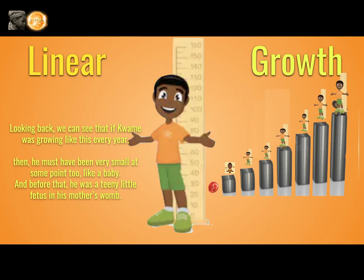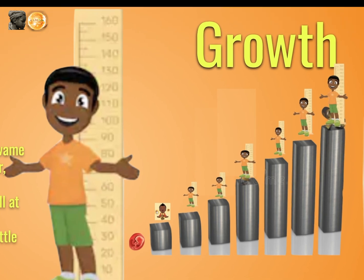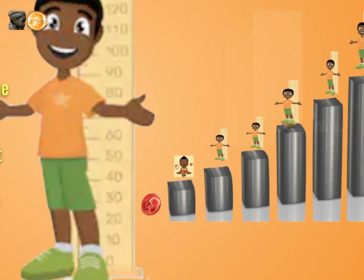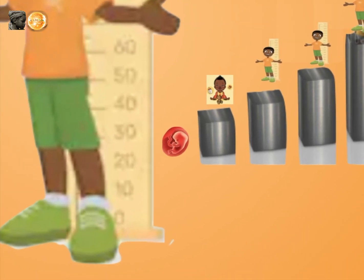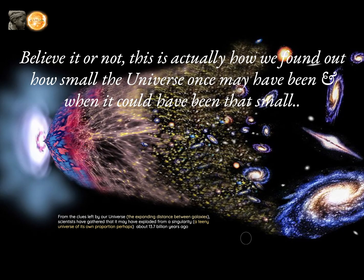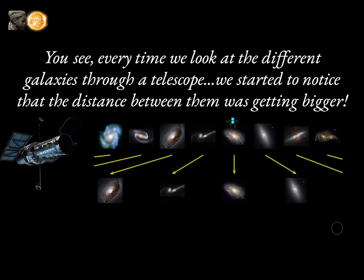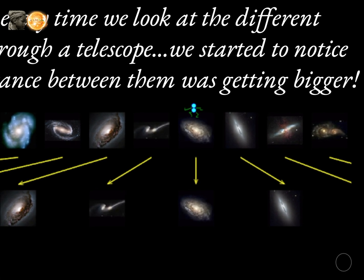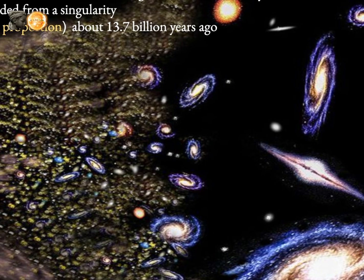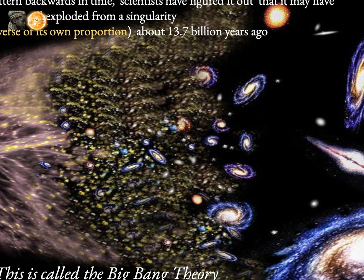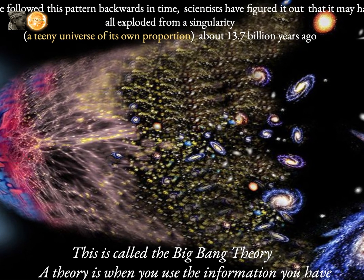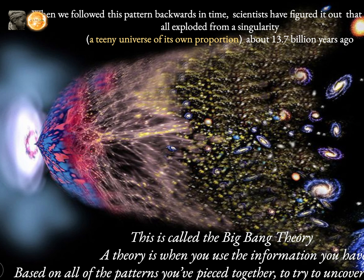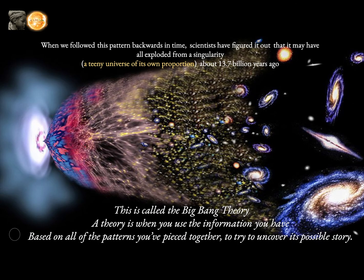Looking back, we can see that if Kwame was growing like this every year, then he must have been very small at some point too — like a baby. And before that, he was a teeny little fetus in his mother's womb. Believe it or not, this is actually how we found out how small the universe once may have been and when it could have been that small. Every time we look at the different galaxies through a telescope, we started to notice that the distance between them was getting bigger. When we followed this pattern backwards in time, scientists figured out that it may have all exploded from a singularity — perhaps a teeny universe of its own proportion — about 13.7 billion years ago. This is called the Big Bang Theory.